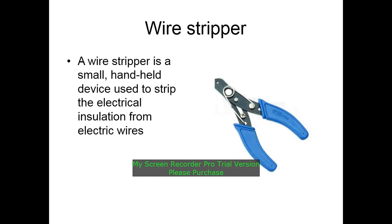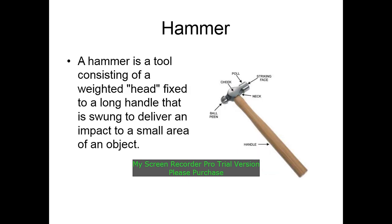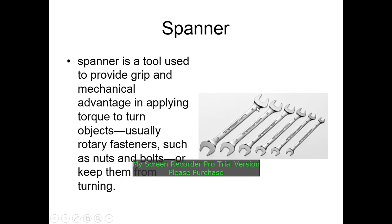A wire stripper is a small handheld device used to strip the electrical insulation from electric wires. A hammer is a tool consisting of a weighted head fixed to a long handle that is swung to deliver an impact to a small area of an object. This is the picture of a hammer.